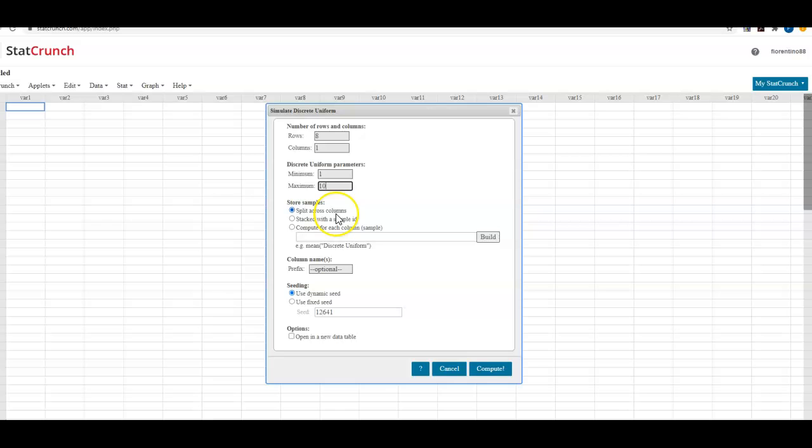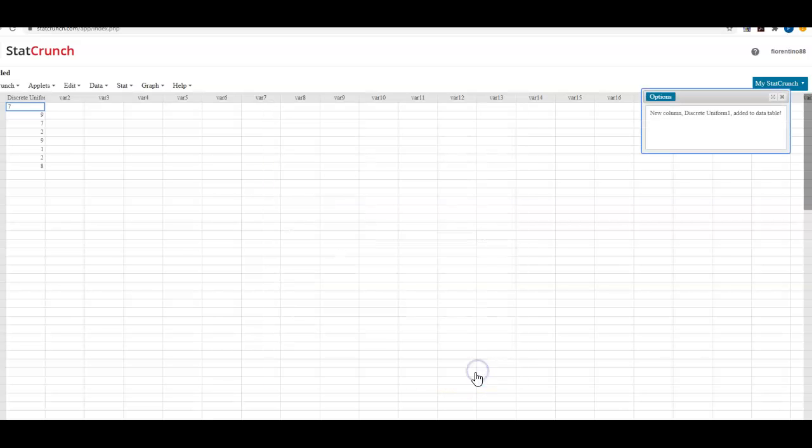We're going to split across columns and then the seeding we want to be able to use our fixed seed and that number is 1120. And then I'm going to select Compute.